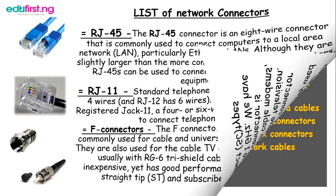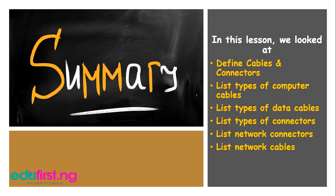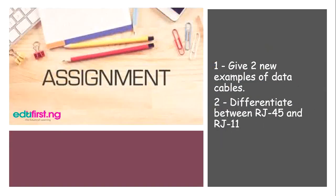That's a brief summary for this lesson. You now have an understanding of how cables work, and you may have seen many of them physically — so watch the video more than once to recognize them. In summary, we looked at defining cables and connectors, listed different types of cables, listed types of data cables, and listed types of network connectors. The assignment: give two examples of data cables and differentiate between RJ45 and RJ11.